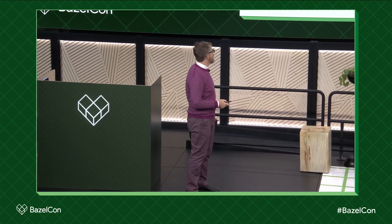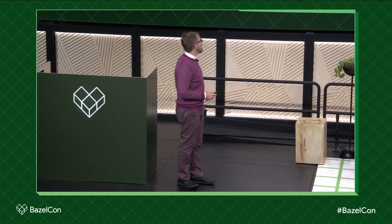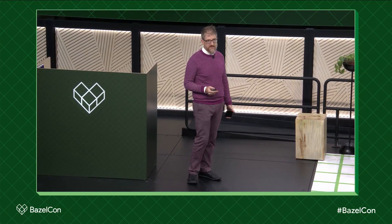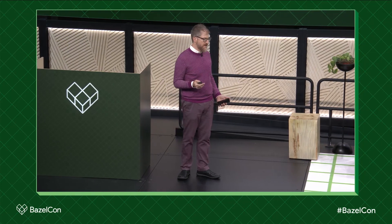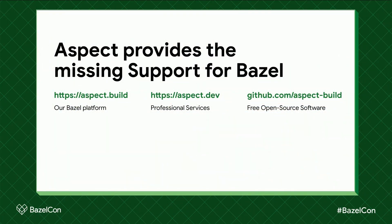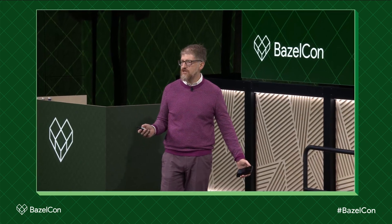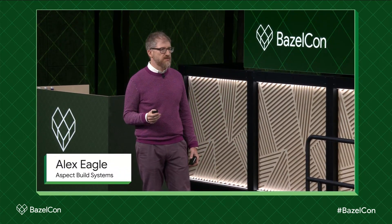I'm going to talk to you about what my company has been working on. There are three constituencies I'm going to cover. Our goal is to make Bazel supported and to make it possible for all engineers to ship their software to production using all the guarantees we love from Bazel. We have a product that's really a platform for running Bazel at aspect.build, which is most usable by developer infrastructure teams — most of you — so that's where I'll spend most of my time.